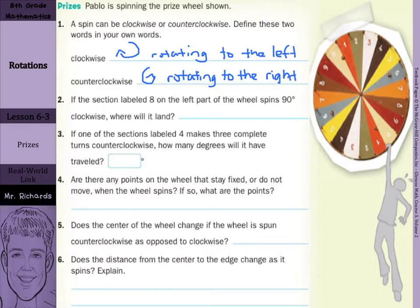Now, if the section labeled 8 on the left part of the wheel, which is right here, spins 90 degrees clockwise, where will it land? Well, it's going to be going up in this direction. So we could say it's going to land at the top.